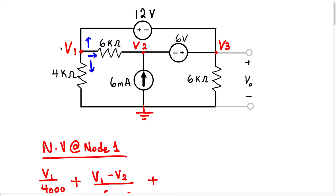Wait — we have a voltage source between two essential nodes. The question is, do we know the voltage at any of those nodes? We don't know the voltage at node 1, and we don't know the voltage at node 2. Therefore, this is going to be a super node. Because it's a super node, we're going to ignore it and go straight to node 3.